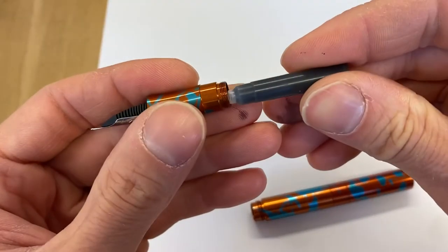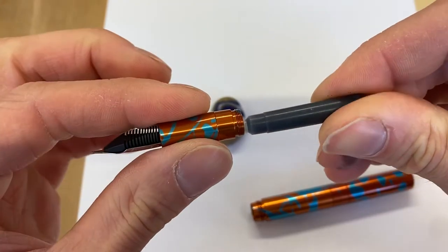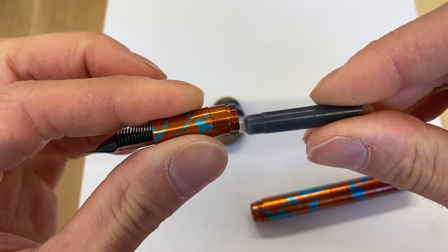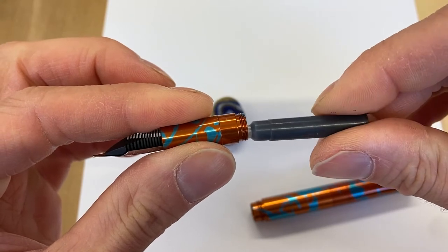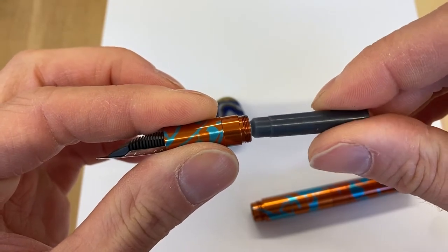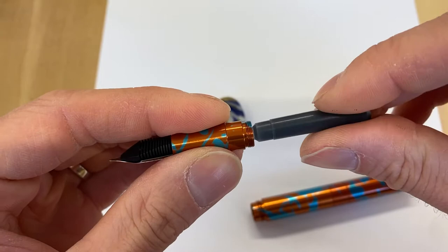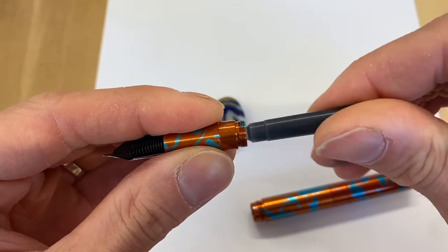So first things first, you always want to make sure that you're on center. So if you're off center, the ink cartridge could get damaged when you put it in and it will allow for air to sneak in at the back of the cartridge and create a leak.